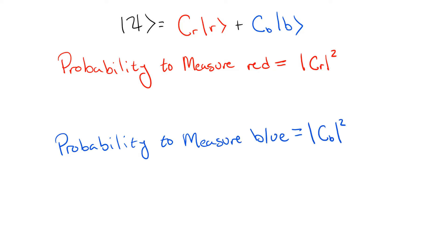This is done by taking the square of the absolute value of the coefficient. So for example, the probability of measuring a red particle is given by the absolute value of cr squared, and similar for measuring a blue particle.